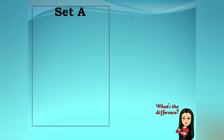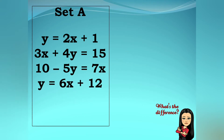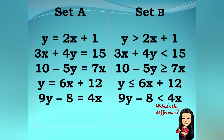Let's start by comparing two sets of mathematical statements. Set A consists of: y equals 2x plus 1; 3x plus 4y equals 15; 10 minus 5y equals 7x; y equals 6x plus 12; and 9y minus 8 equals 4x. In Set B we have: y is greater than 2x plus 1; 3x plus 4y is less than 15; 10 minus 5y is greater than or equal to 7x; y is less than or equal to 6x plus 12; and 9y minus 8 is less than 4x. So what's the difference? Let's check the answer.